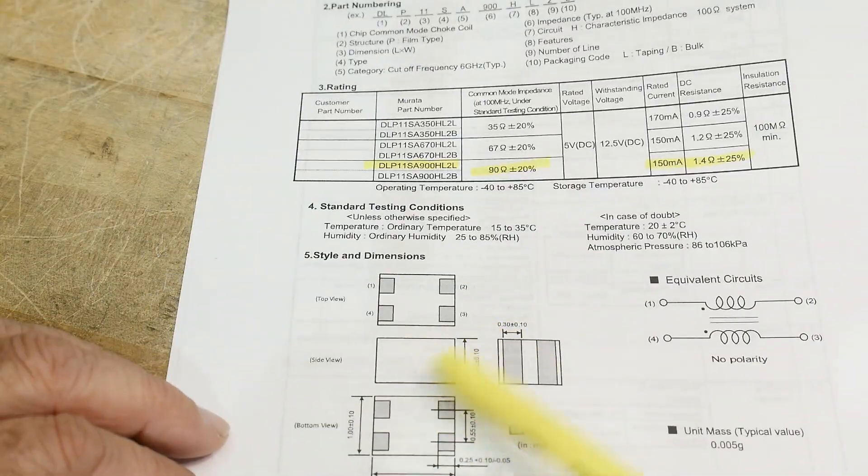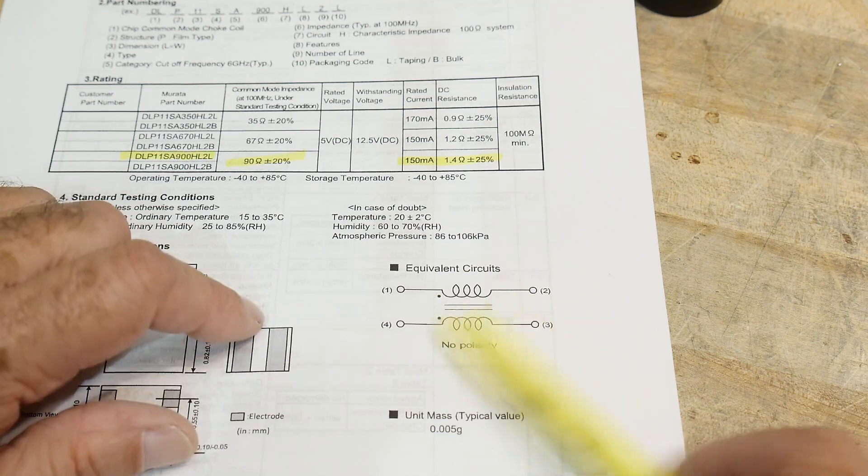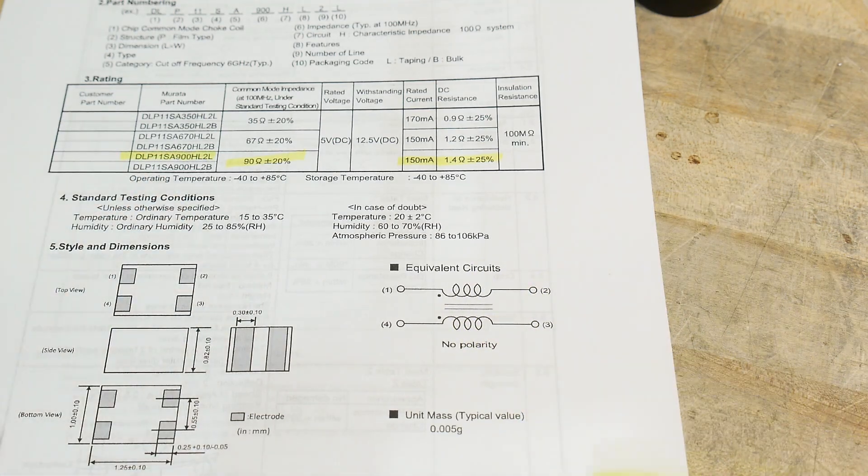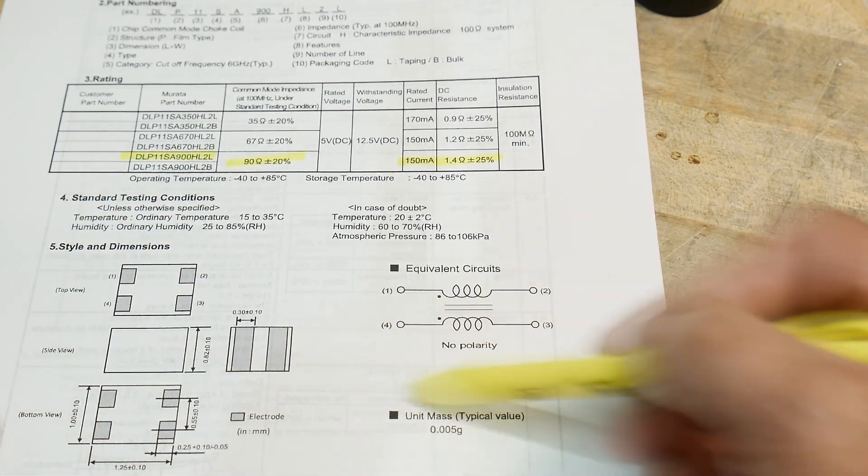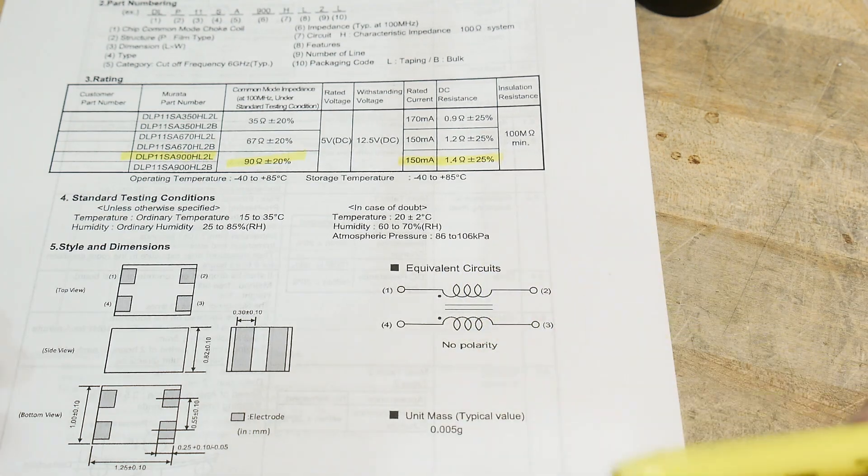Okay, chip common mode choke coil. And it has, here, it looks like this. There's a winding here and a winding here, and you can send your signal through, and any common mode will get canceled out. If there's common mode noise here, it's going to be same on both, and it'll filter that out.